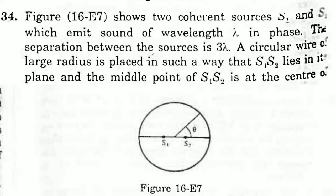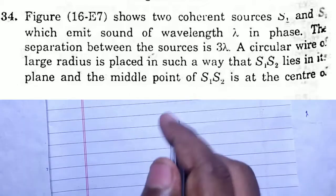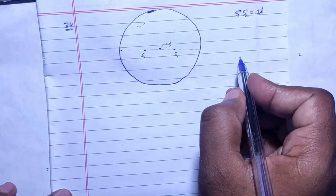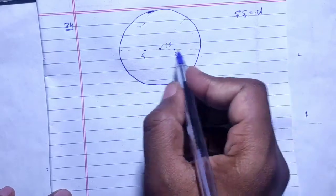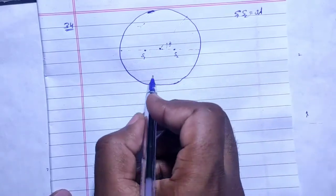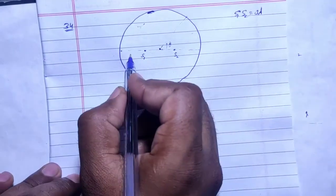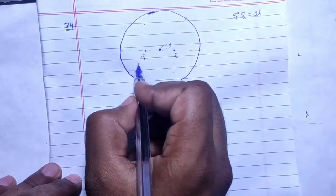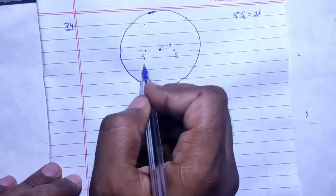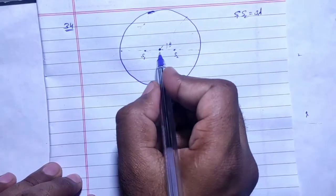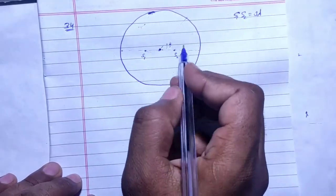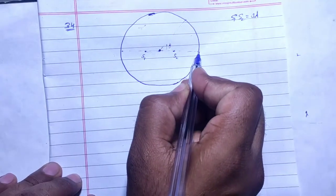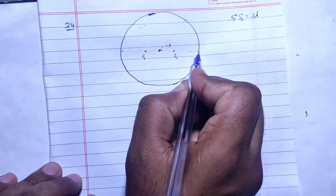तो अपने पास ये जो circular wire है इसका radius बहुत जादा है। Radius at least 3 lambda से तो बहुत जादा है और ये जो middle point 3 lambda का वो center of this circle है। तो हम पूछा है कि इस circle पे वो point बताने है जहां पर constructive interference मिलेगा।